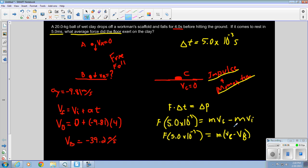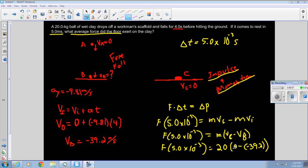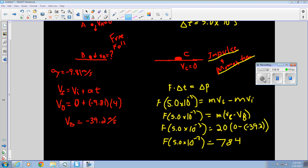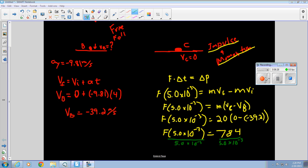So now we can plug numbers in. We've got 20 for the mass times 0, that comes to rest, minus negative 39.2. That comes from the velocity of B. Now just calculate and solve for force. Divide both sides by 5.0 times 10 to the negative 3. Force is equal to 156,800 newtons.